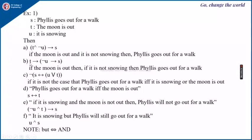The next one: T implies bracket not of U implies S. Here T represents the moon is out, and since it is an implication it starts with if. If the moon is out, then again here it is an implication, so it is: if it is not snowing then Phyllis goes out for a walk.